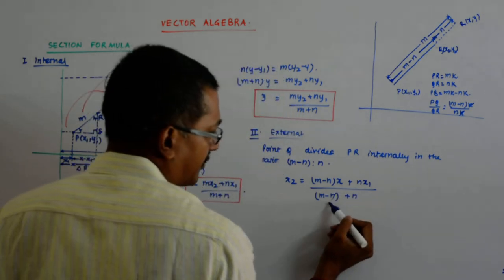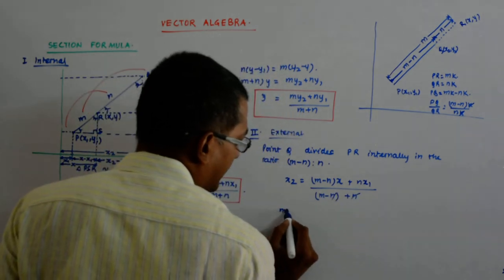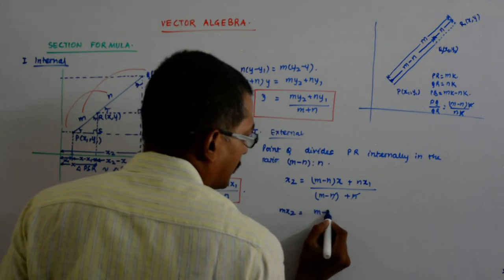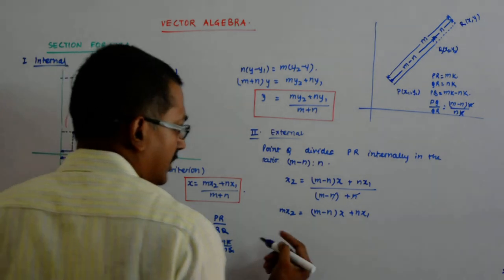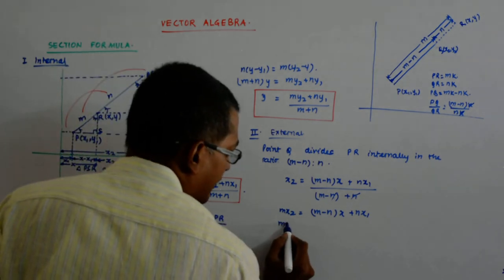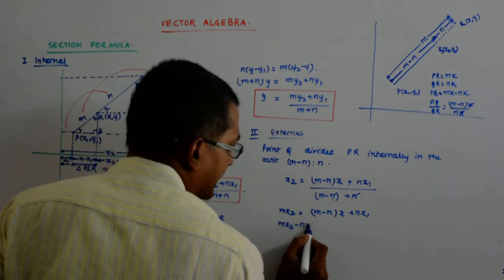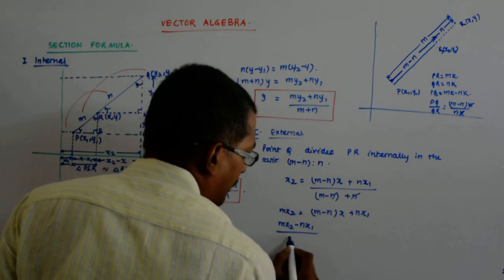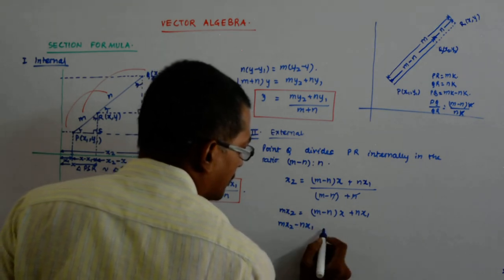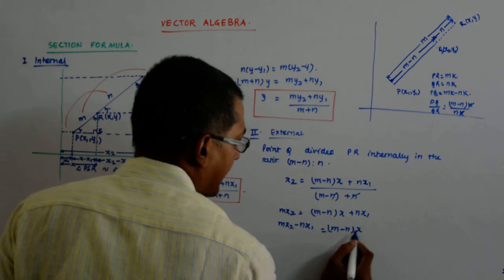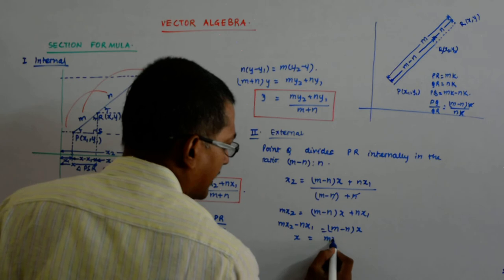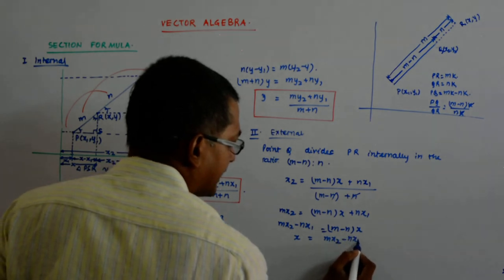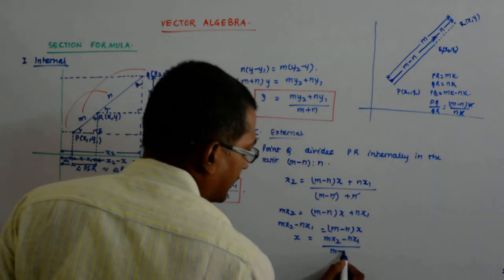So, that gives me m, this m multiplies here and gives me m x 2 is equal to m minus n x plus n x 1. So, it actually gives me m x 2 minus n x 1 is equal to m minus n x. So, x is equal to m x 2 minus n x 1 upon m minus n.